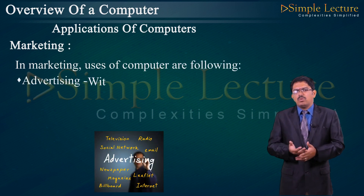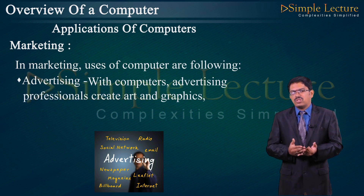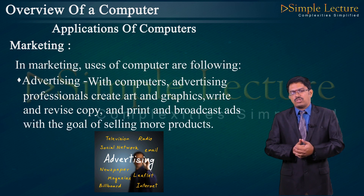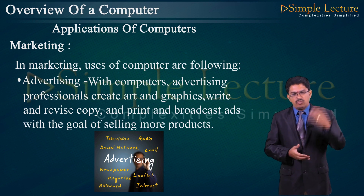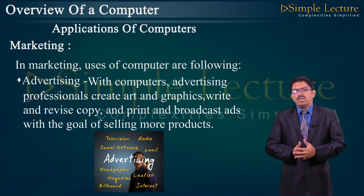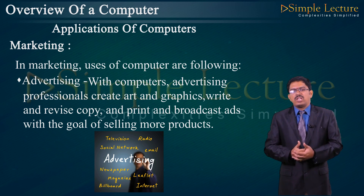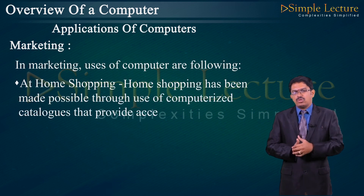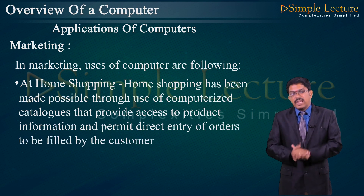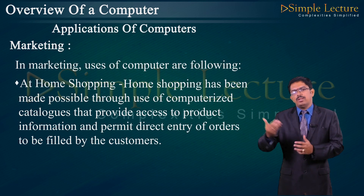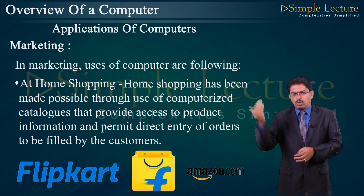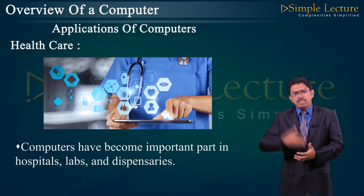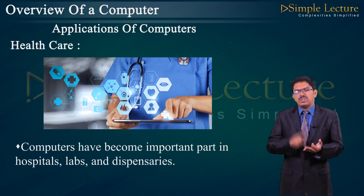Marketing: advertising professionals use computers to create art and graphics, write copy, print, and broadcast ads with the goal of selling products. Softwares such as Flash, Photoshop, and Adobe Flash are used for designing and marketing purposes. Home shopping has been made possible through the use of computerized catalogs, providing access to product information and permitting direct entry of orders. Examples include Flipkart, ShopClues, and Amazon — items can be ordered and purchased online.